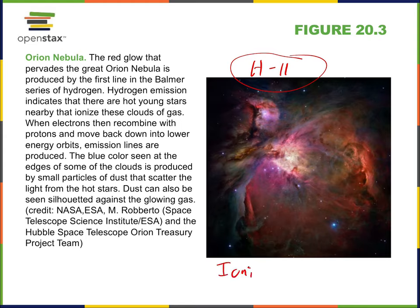H II is ionized hydrogen. We'll be talking about hydrogen quite a bit — it's the most abundant element in the universe by far. Hydrogen can have different effects: it can make molecules, but it can also just get ionized, meaning its single electron gets freed. That makes a gas that glows, and it can glow in the visible spectrum with particular colors we can see.